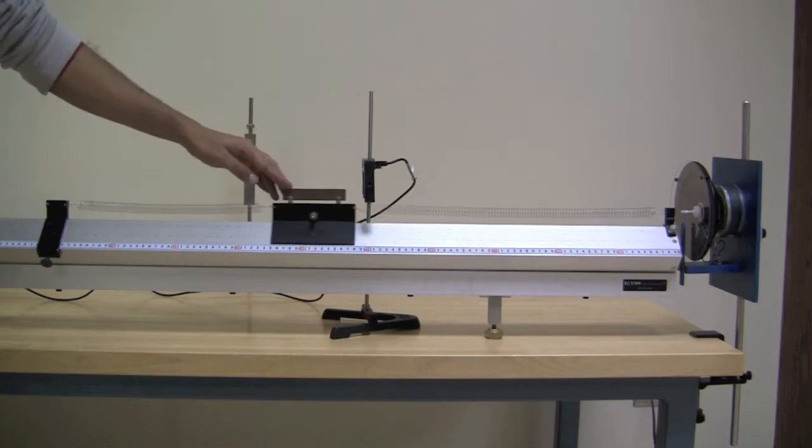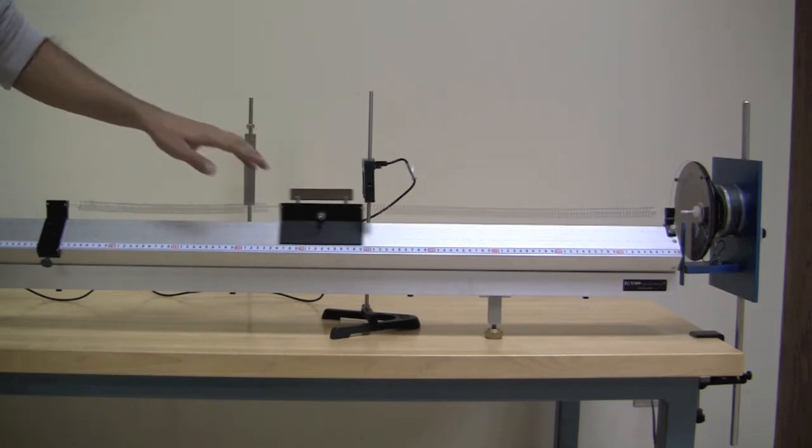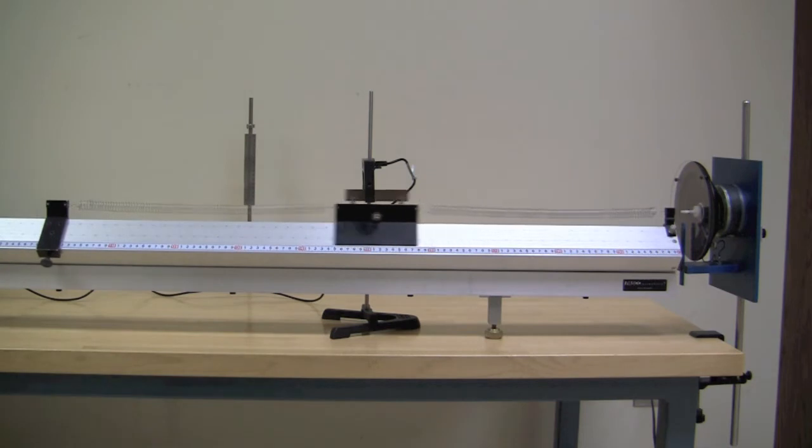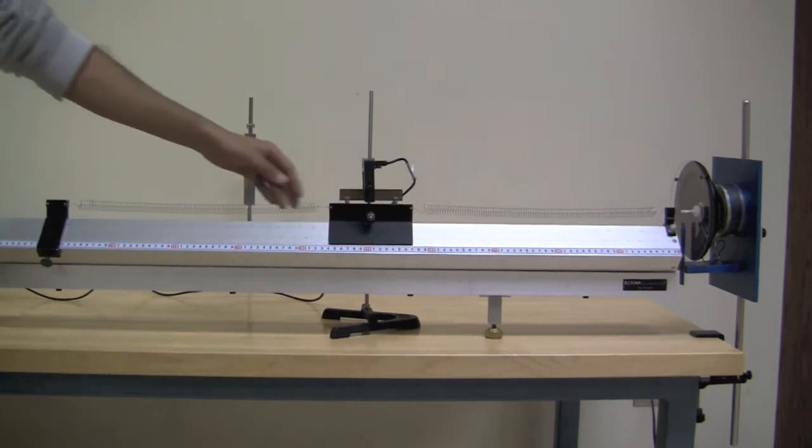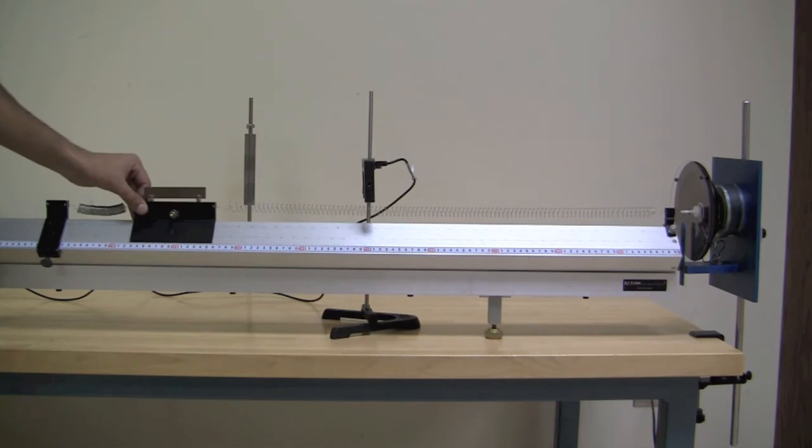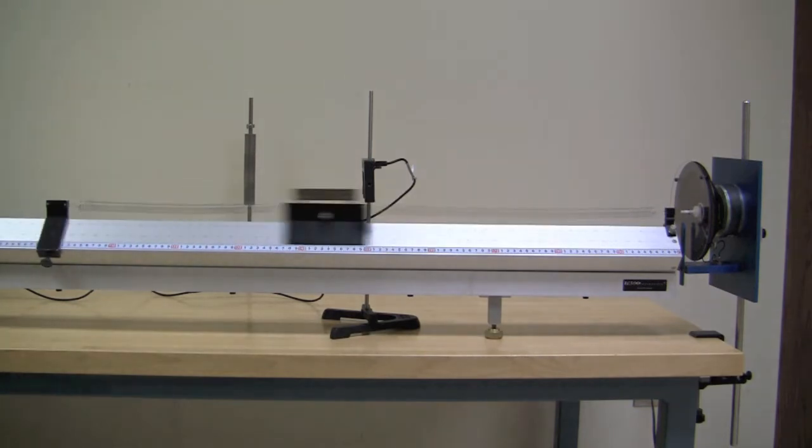For part 1, begin by setting up the springs appropriately. Don't stretch them beyond their elastic limit and don't let them sag and drag on the track. Locate the photo gate so the glider cuts off the beam when the glider is in the equilibrium position.